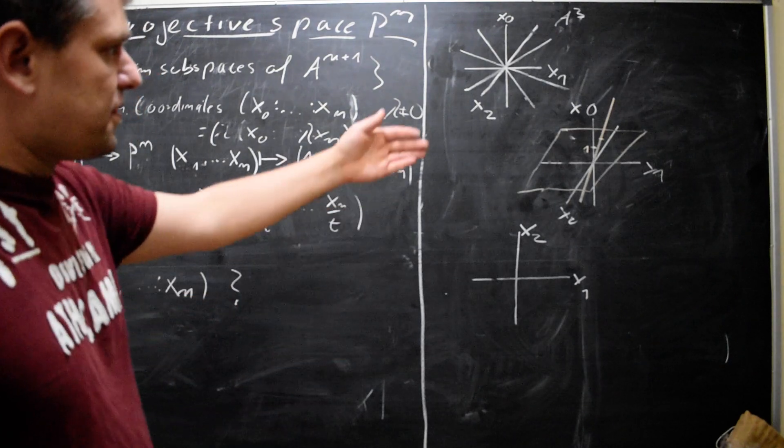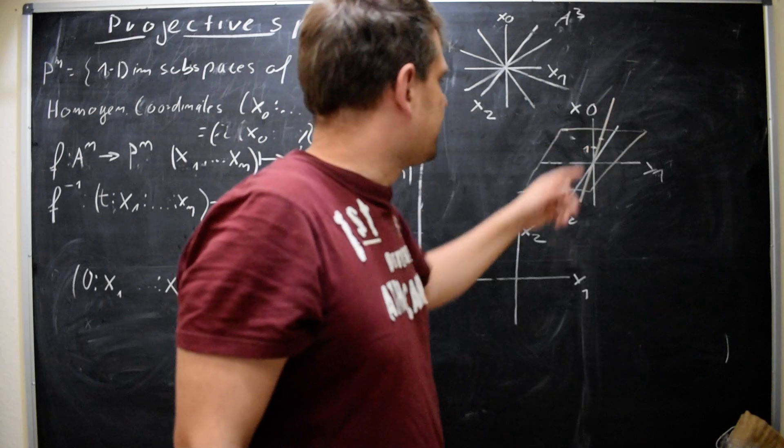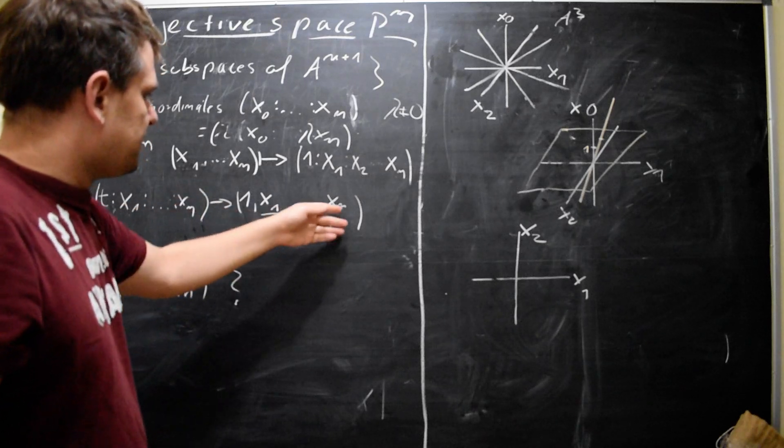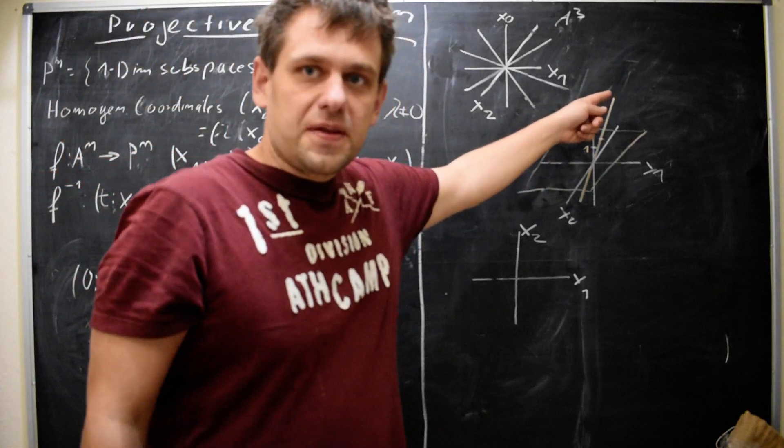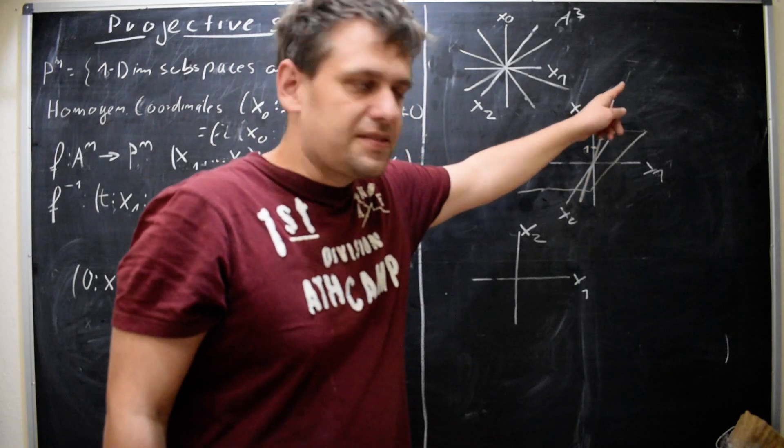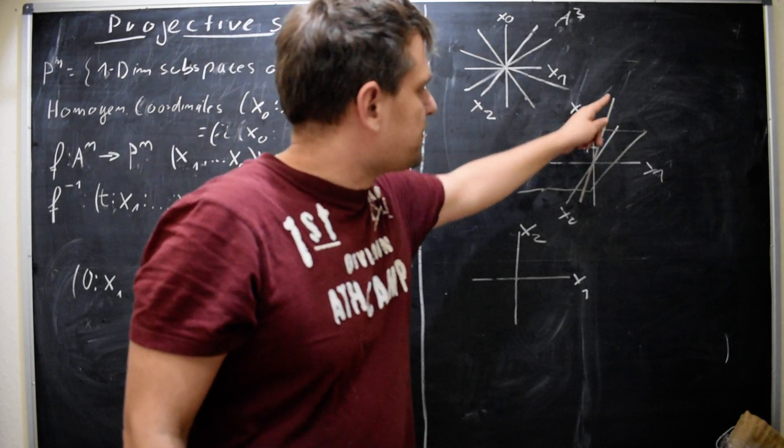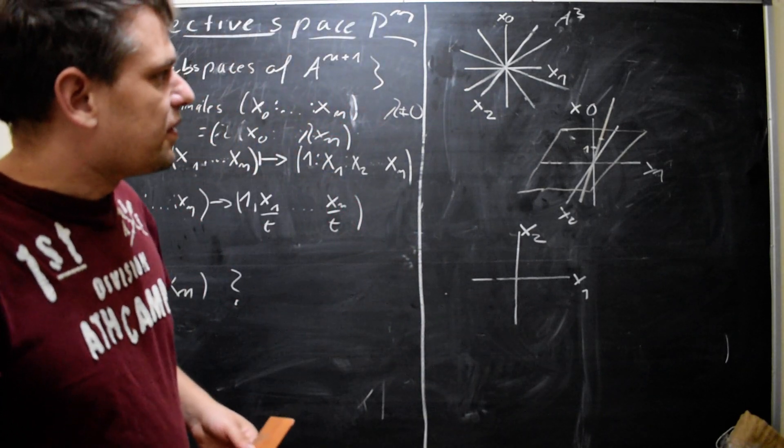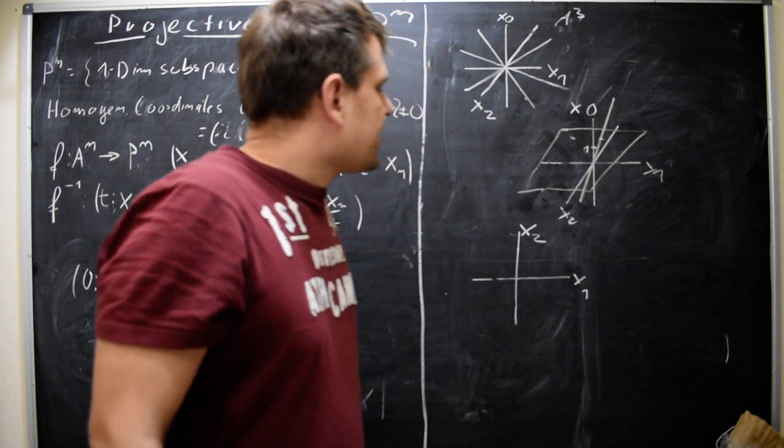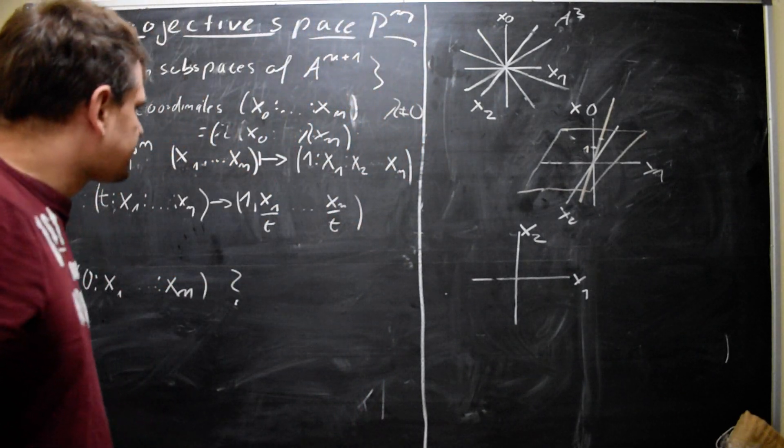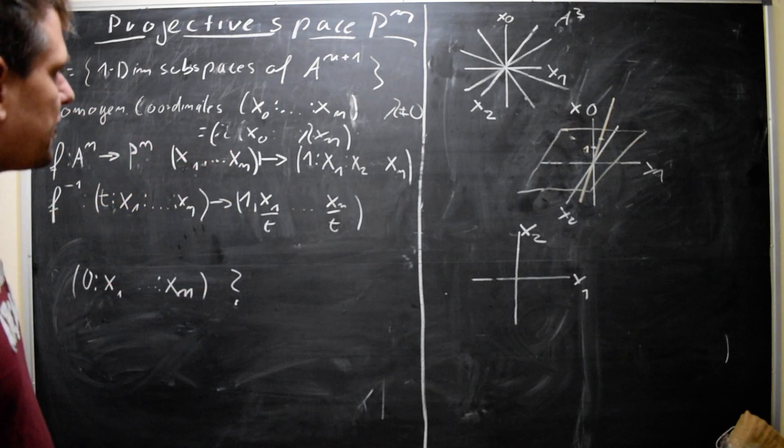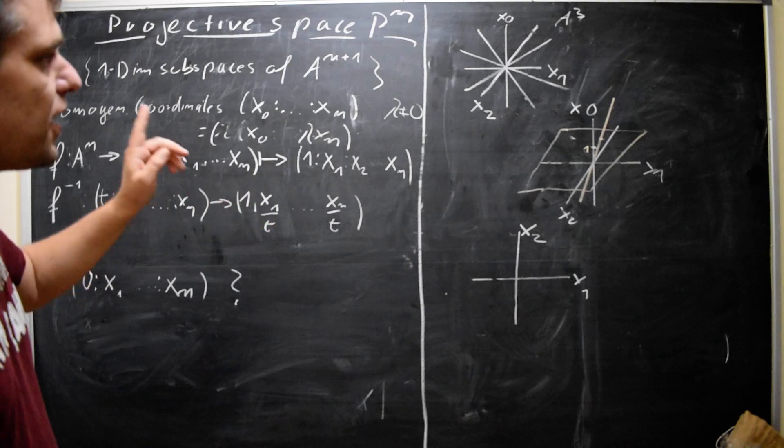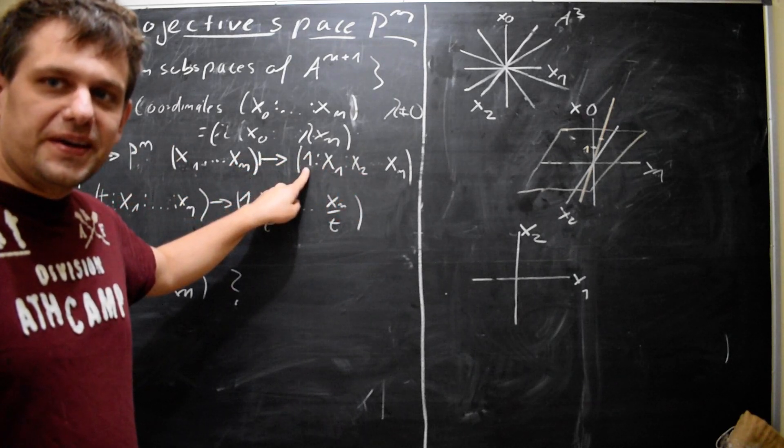And obviously, we can have a map in the other direction. So this equivalence class (t : x_1 : ... : x_n), we simply divide by t, then we get 1 again. And what this graphically means is that we take such a one-dimensional vector space and we map it back to this point where this vector space passes through this plane here. And so we have a bijection. But note that this map f has as image only those equivalence classes where this first entry is unequal to zero.